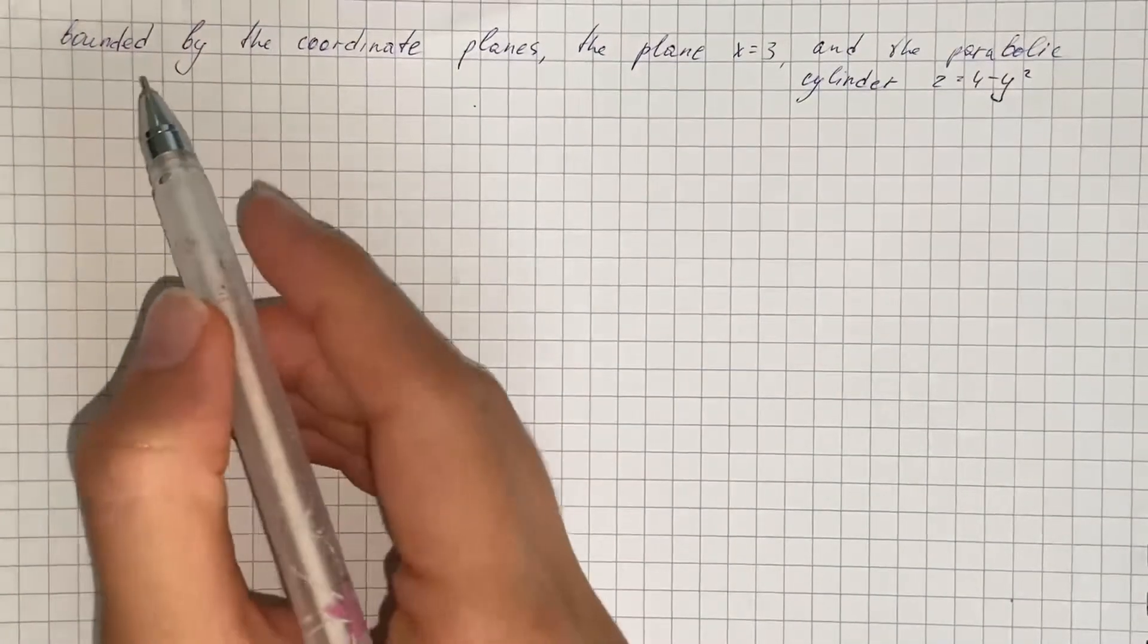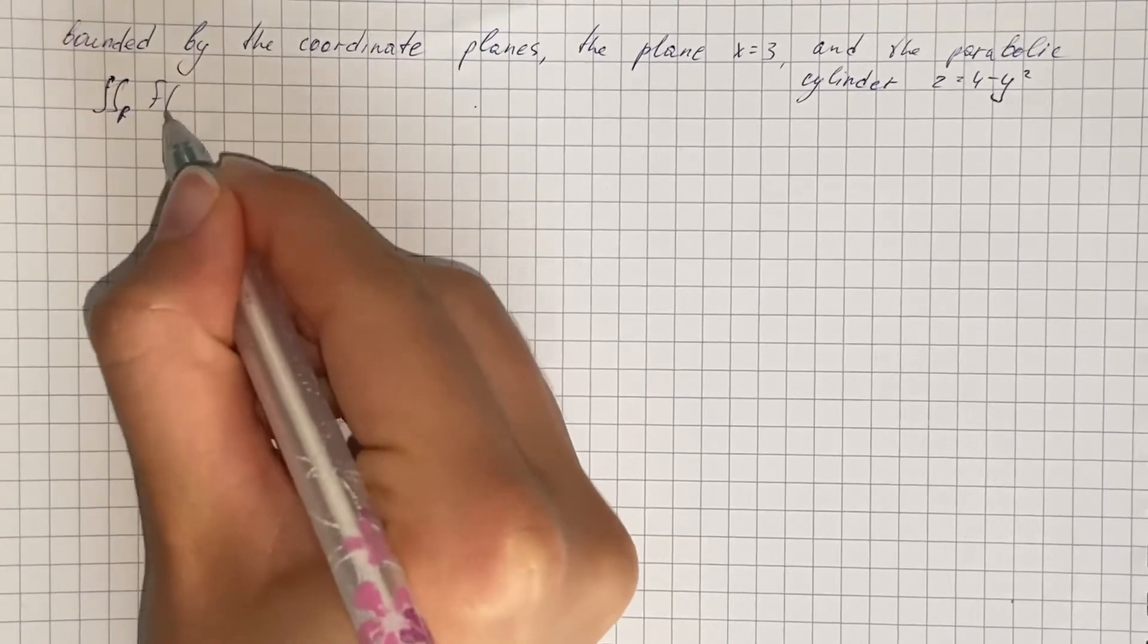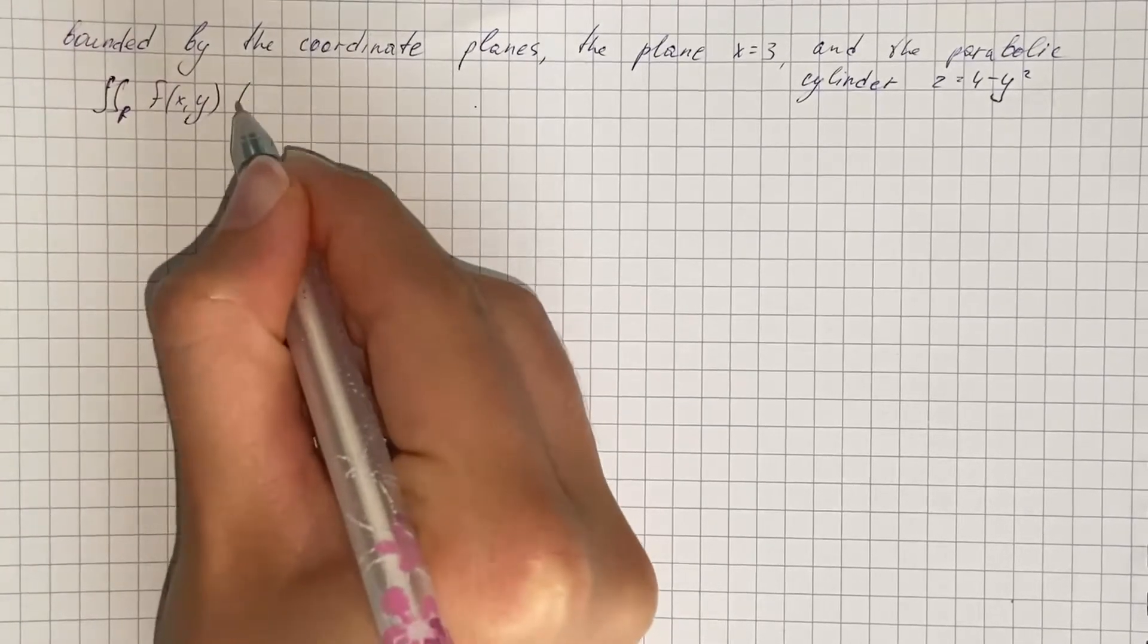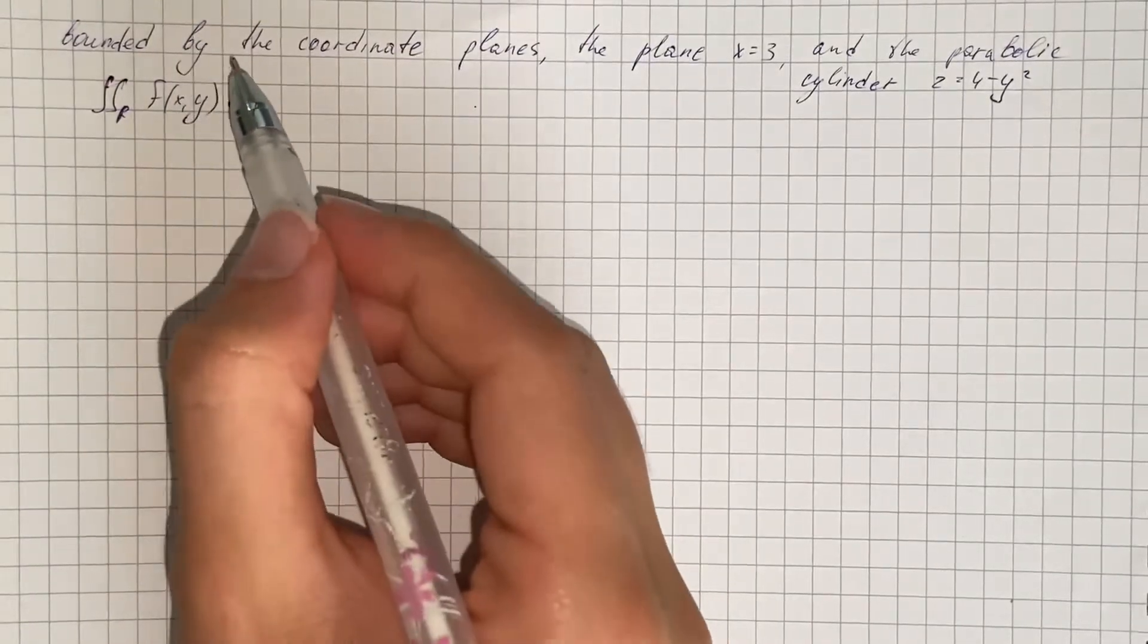To find the volume of the solid we need to relate double integral. And to find the value of double integral we must find the area of integration.